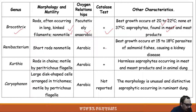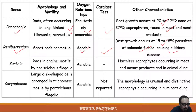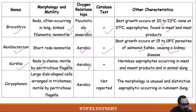Renibacterium: morphology — short rods, non-motile, aerobic, and catalase positive. Growth occurs best at 15–18°C. They are parasites of salmonid fish, causing kidney damage. Kurthia: rods occurring in chains, motile by means of peritrichous flagella, aerobic, catalase positive, and harmless saprophytes occurring in meat, meat products, and animal dung.